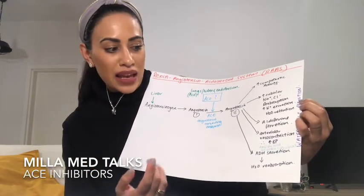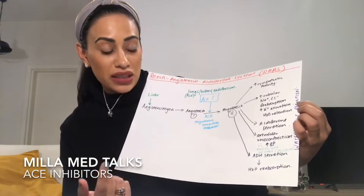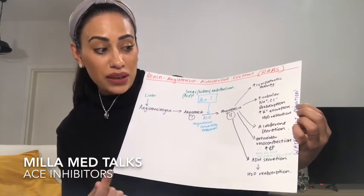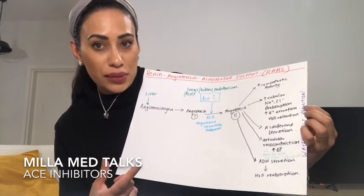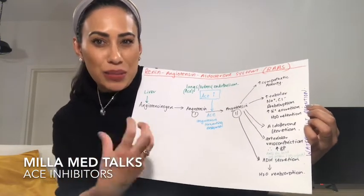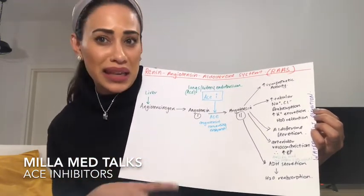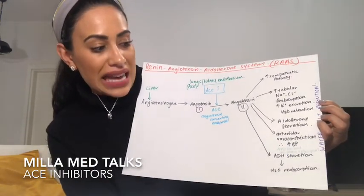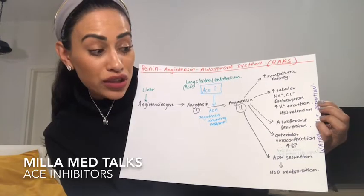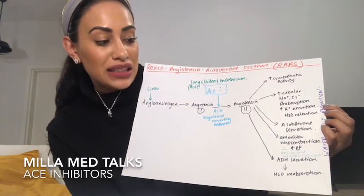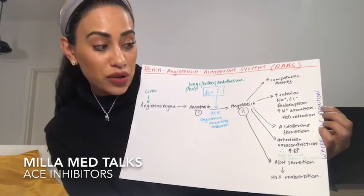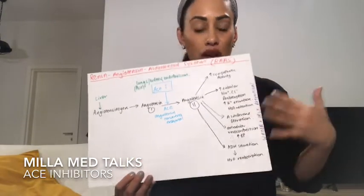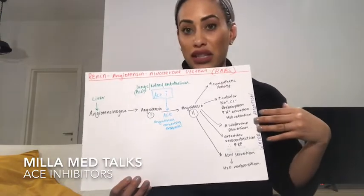We get the AT1 receptor binding to the Gq protein on the IP3 signal transduction pathway — that goes into a bit more biochemistry which we don't need right now. So the vasoconstriction, we also get antidiuretic hormone secretion, which leads to H2O reabsorption. All of these effects of angiotensin 2 will lead to water and salt retention, ultimately increasing blood pressure.